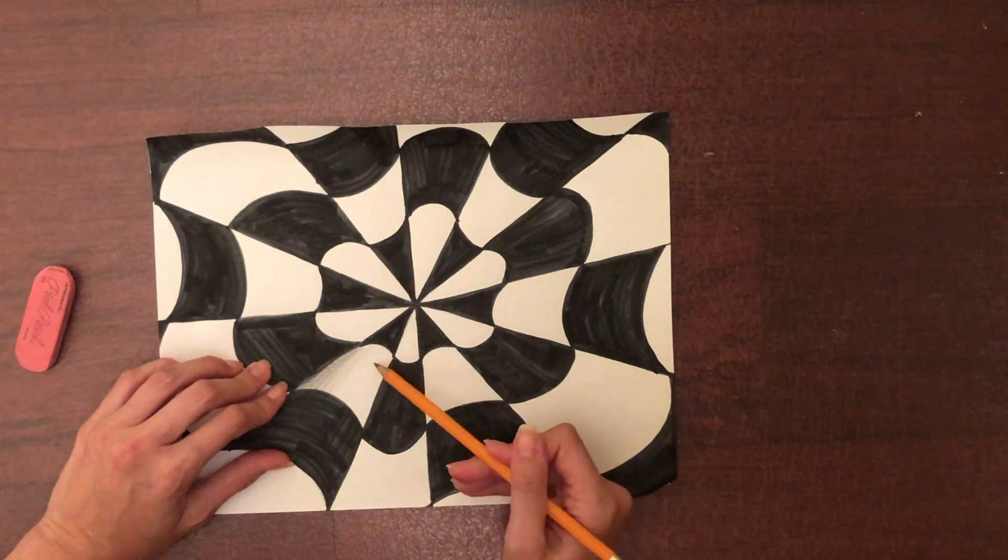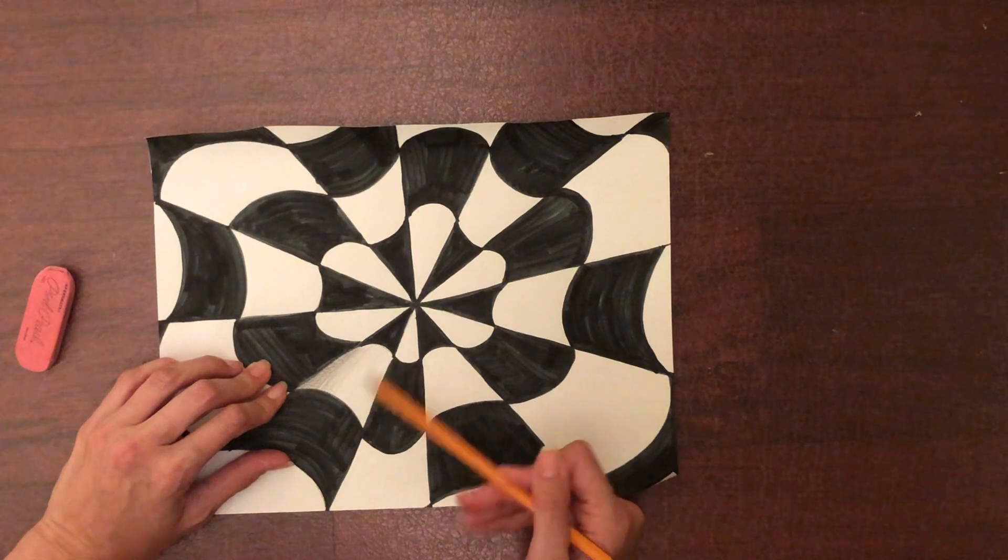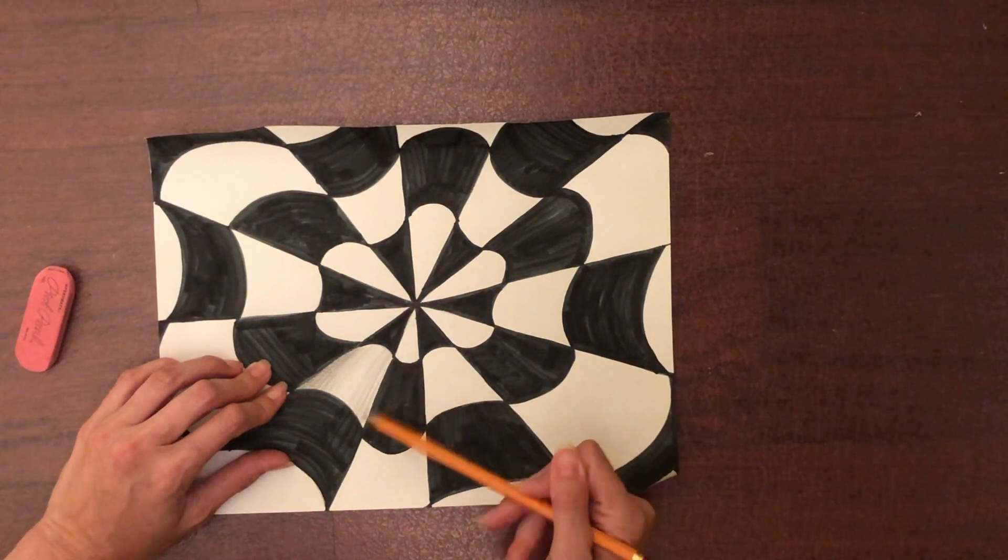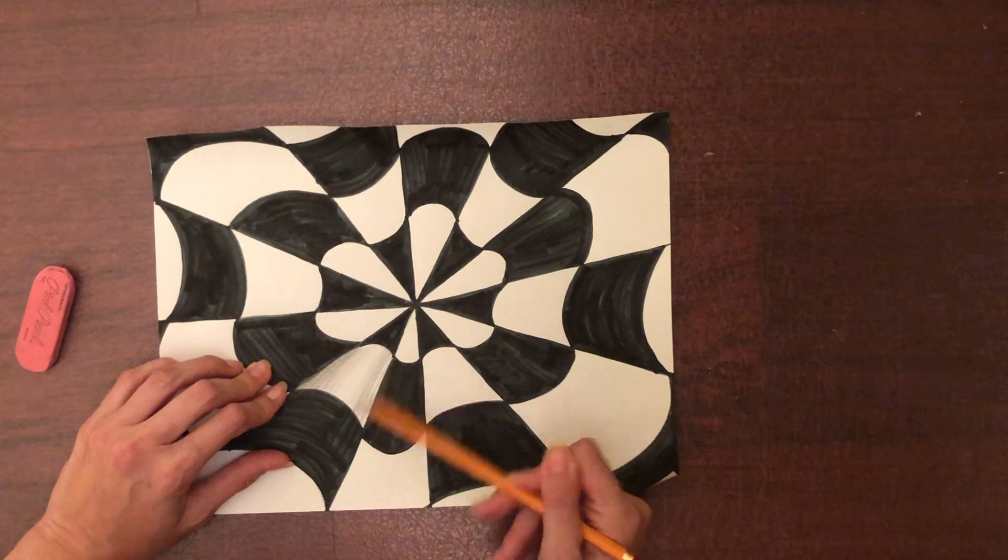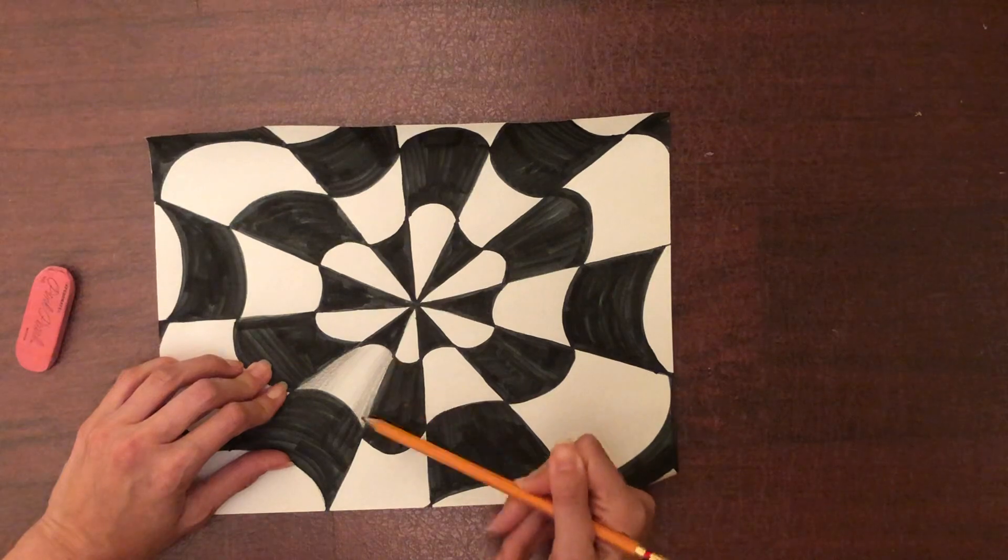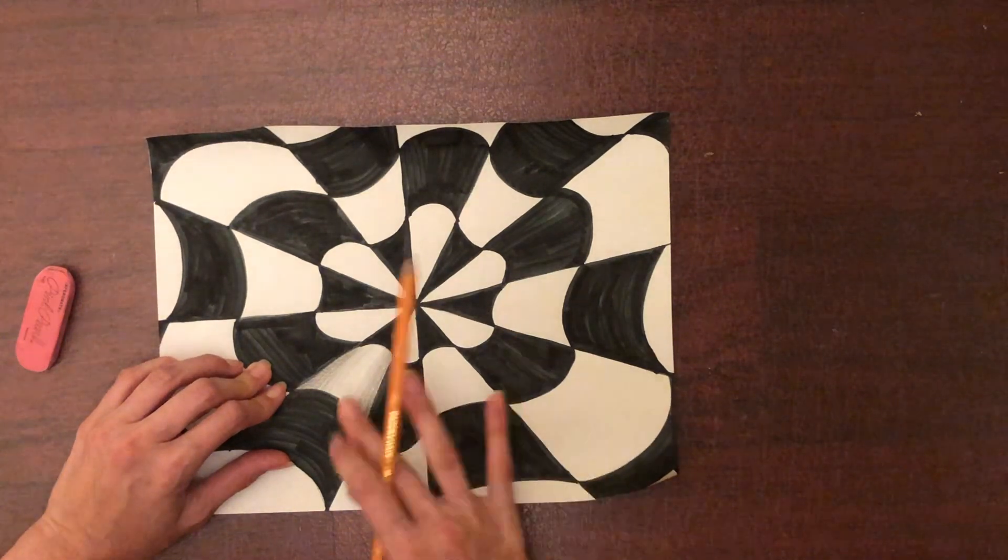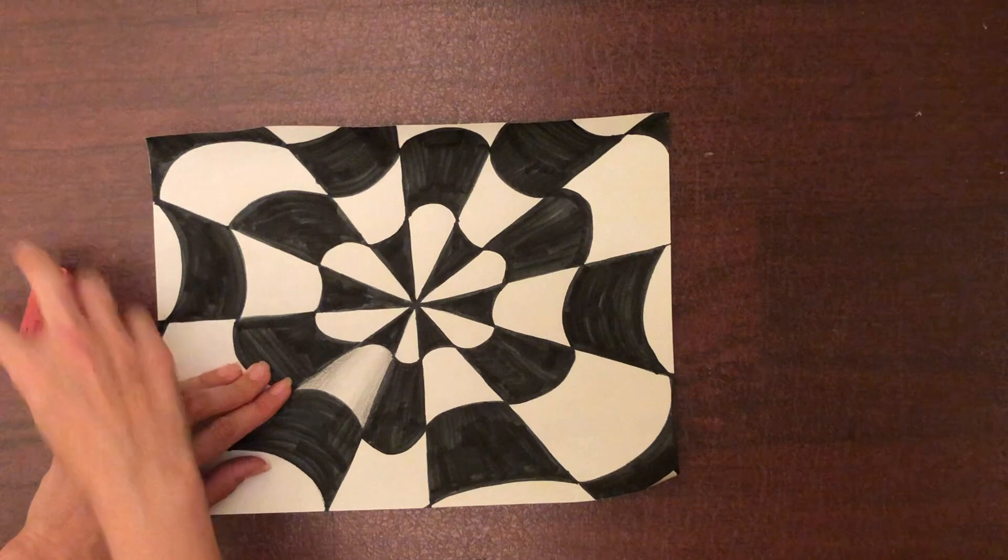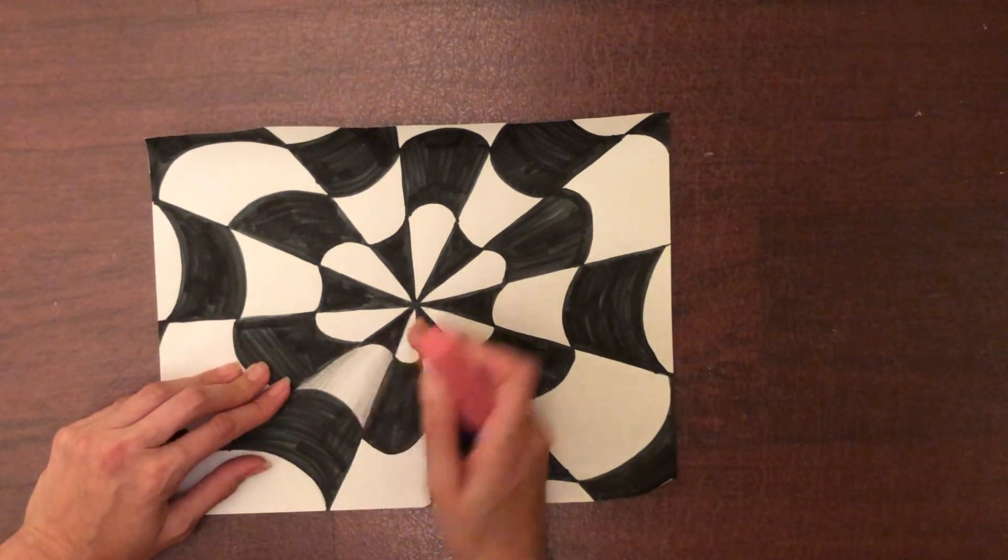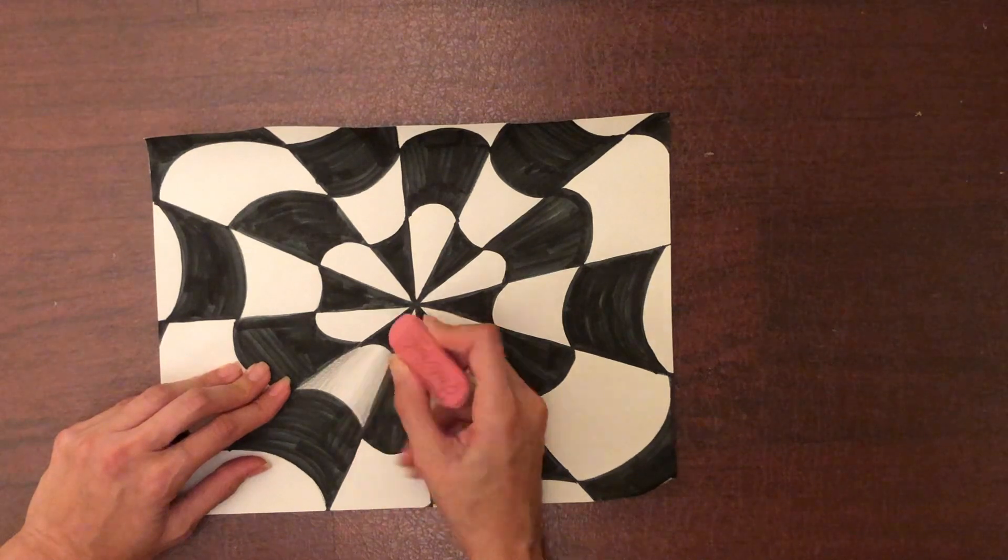Now we're going to do the same thing going this way. Leave white space. Color lightly. Then medium. And then darker. So now that looks really 3D. And I can take my eraser and erase the highlight a little bit in the middle in case you accidentally smeared some pencil there.